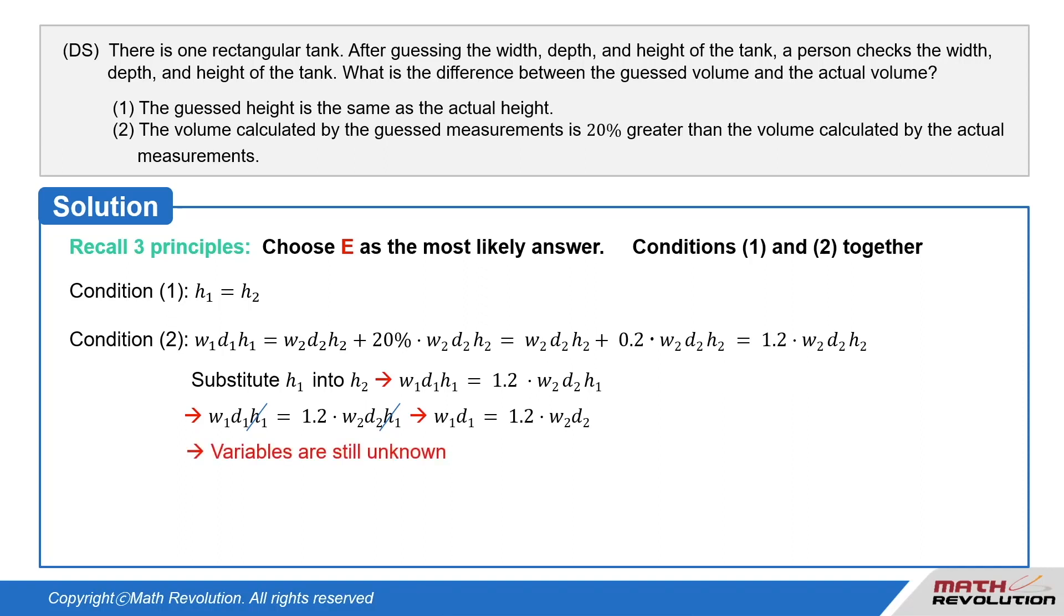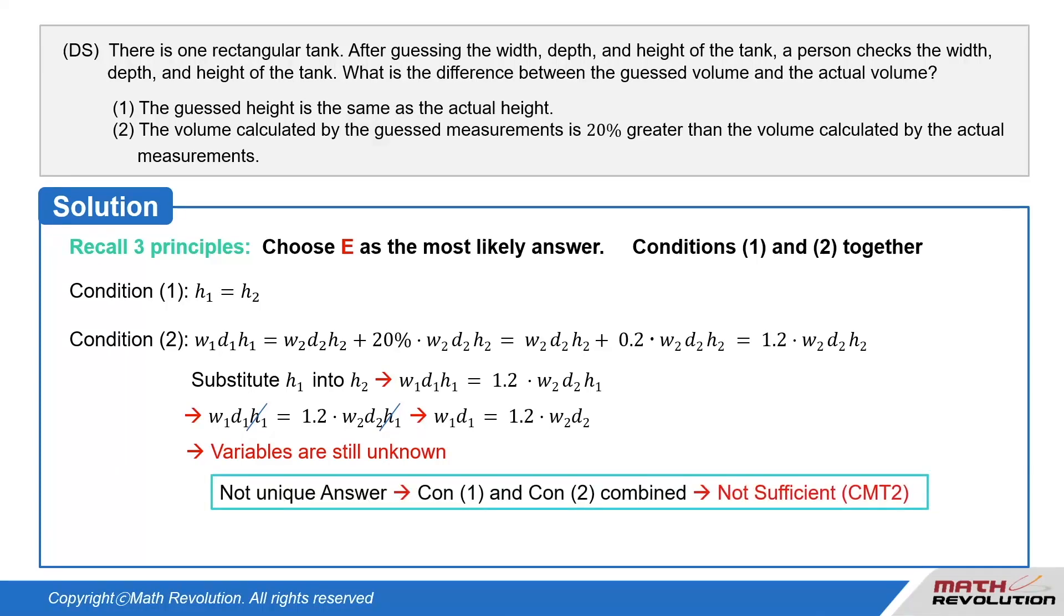We still cannot say anything about the difference, as there are too many variables remaining. Therefore, we cannot get a unique value of W1·D1·H1 minus W2·D2·H2.